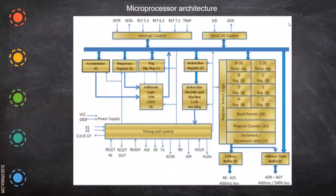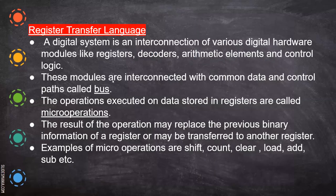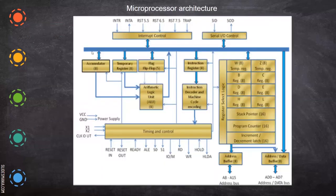A digital system is an interconnection of various components like registers, ALU, decoders, timing and control signals, arithmetic elements, and control logic. In order to control the data which flows within that and achieve whatever result we want, we need some instructions to be given to the computer. These modules are interconnected with common data and control lines — that is the bus — and the data from one register is placed on the bus and from there goes to another.